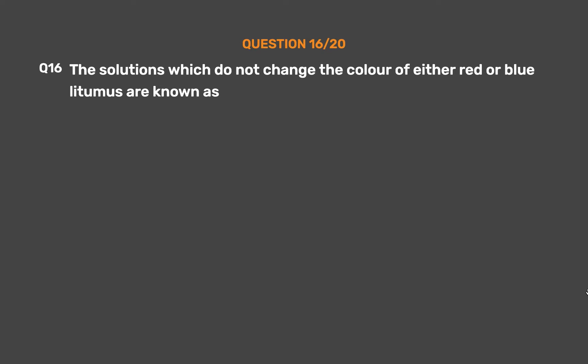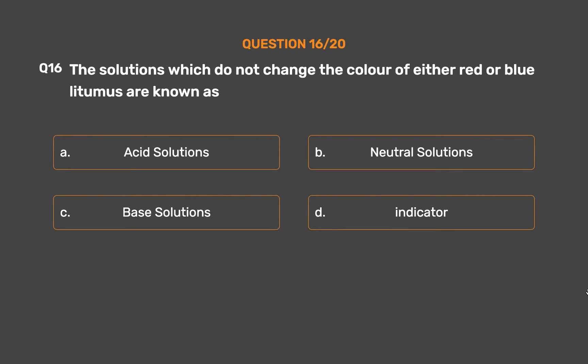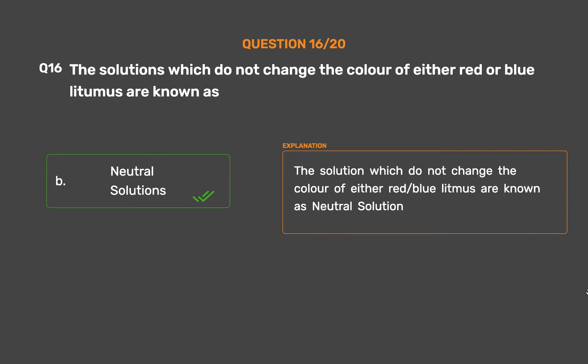Question number 16. The solutions which do not change the color of either red or blue litmus are known as — Option A: Acid solutions. Option B: Neutral solutions. Option C: Base solutions. The correct answer is Option B: Neutral solutions. Solutions which do not change the color of either red or blue litmus are known as neutral solutions.